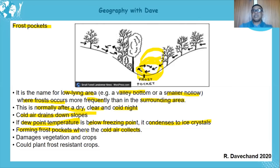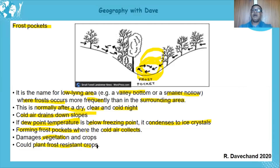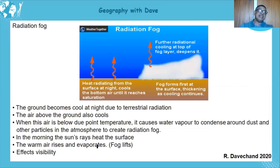Similar to the conditions with catabatic winds, if there's frost in the area it damages vegetation and crops. People who have settled there have to plant frost-resistant crops. It is also very cold and uncomfortable. That covers frost pockets.